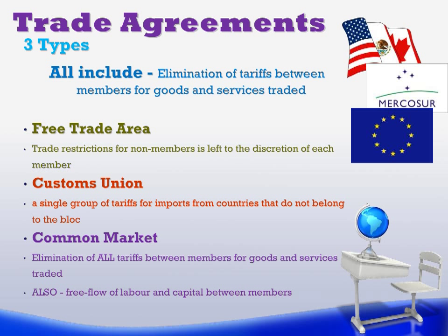The last type is a common market. This is essentially a customs union with a slightly enhanced version. A common market again has elimination of tariffs between all member countries, and if they wish to trade with outside members, the whole group agrees to it. The difference is that within the common market, all countries have freely flowing capital and labor — a person can come from one country and work in another without needing a new work visa. All countries are basically on the same playing field. This is what we see with the European Union.